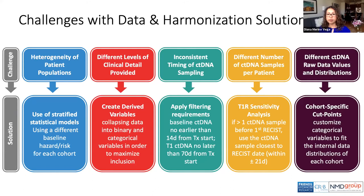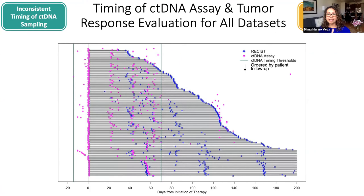On the next few slides, I will describe some of these solutions. Inconsistencies in the timing of CT-DNA assay and tumor response evaluations across the data sets were apparent very early on, as this figure clearly shows. Every row represents a patient, and these are ordered by follow-up time. The pink dots represent the timing of the CT-DNA sampling, and the blue dots represent the tumor response assessments. As you can see, the number of CT-DNA samples per patient also differed by sponsor. We used timing windows to ensure that samples that were overly dissimilar from the rest of the data were excluded. We also conducted a sensitivity analysis to determine the influence of CT-DNA timing, but we didn't have the right type of data to draw any significant conclusions.